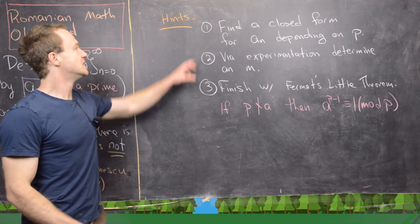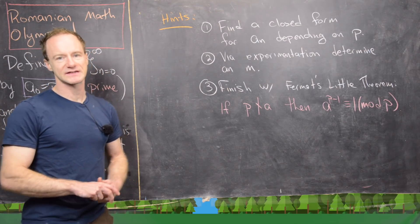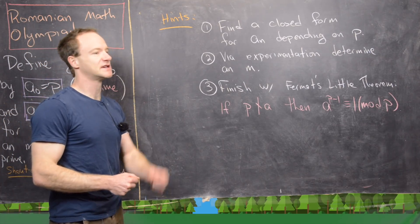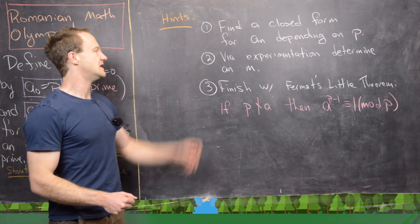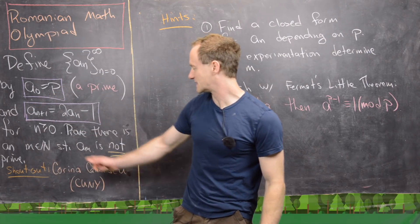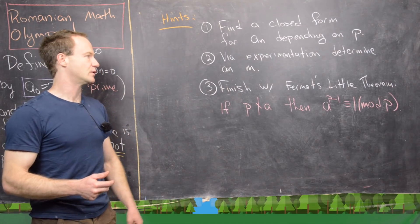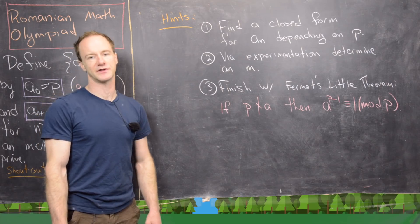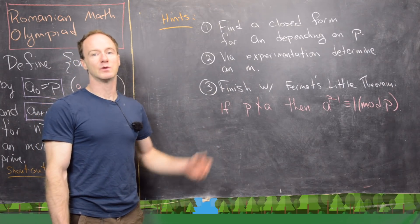So let's look at the hints for this problem. The first thing we'll do is find a closed form for a_n, which is obviously going to depend on p. There are probably tons of ways to find this closed form, but I always tend towards using generating functions, so that's how we're going to find our closed form. Next, via experimentation, we'll determine the value of m which makes this thing not a prime. And finally, the last thing is to finish this off with Fermat's little theorem. Maybe pause the video now, give the problem a go with these hints, and then we'll look at a solution.